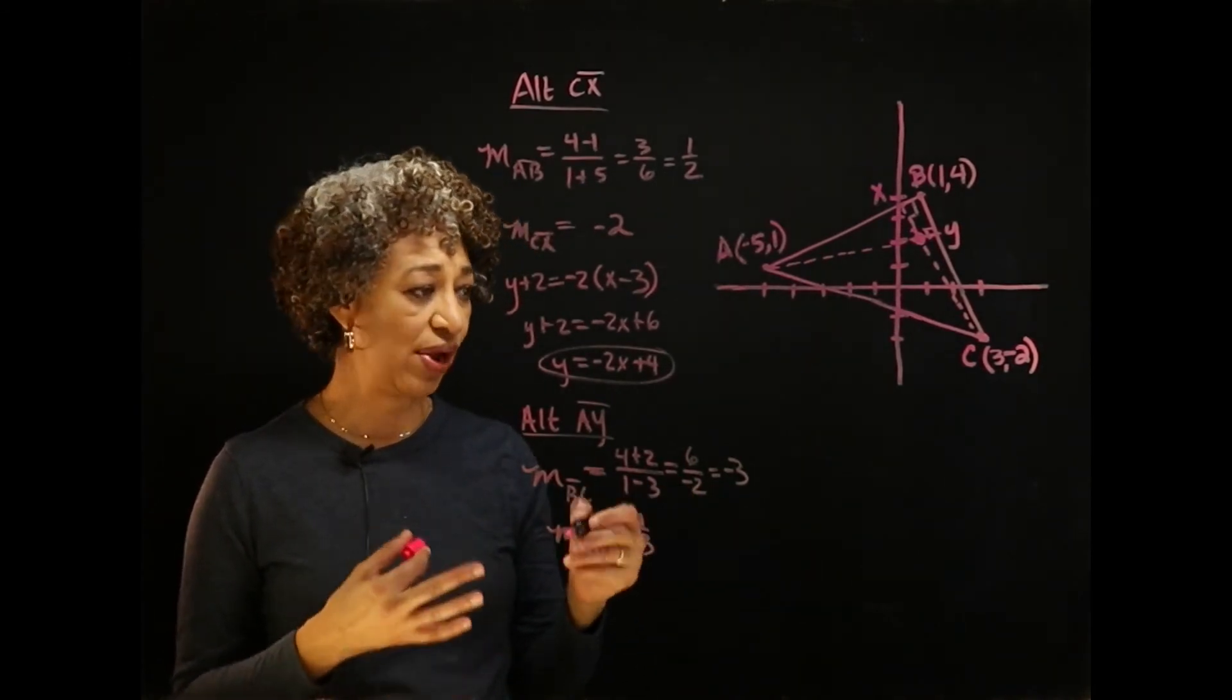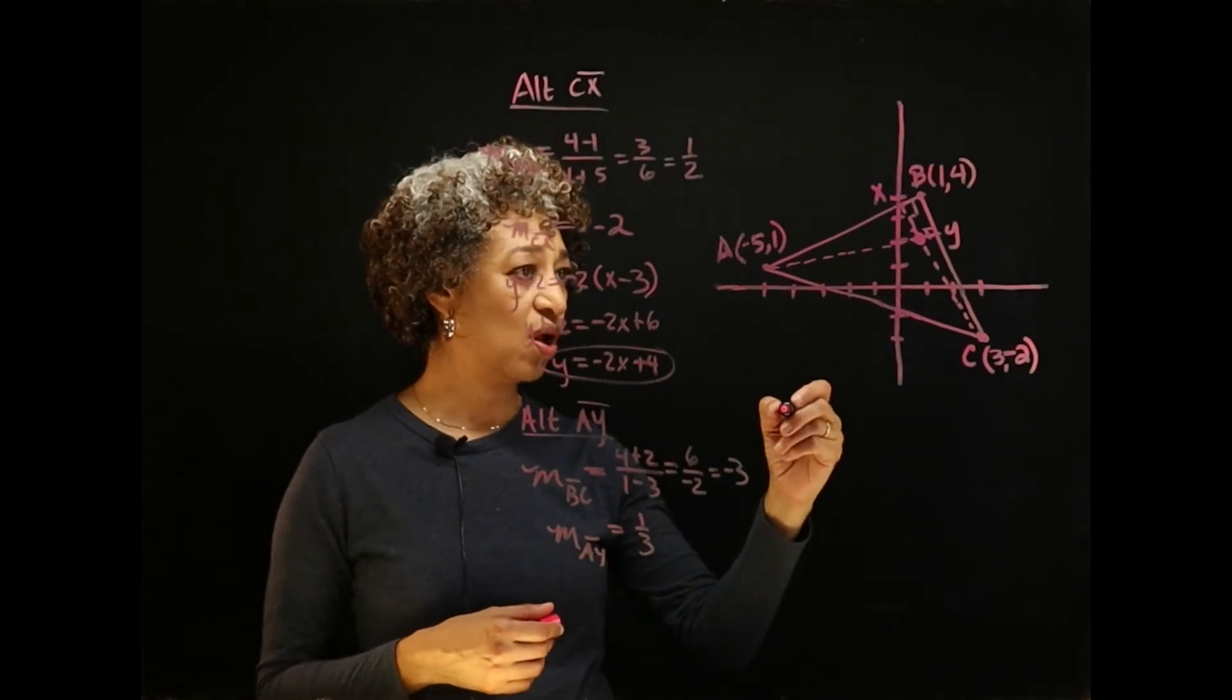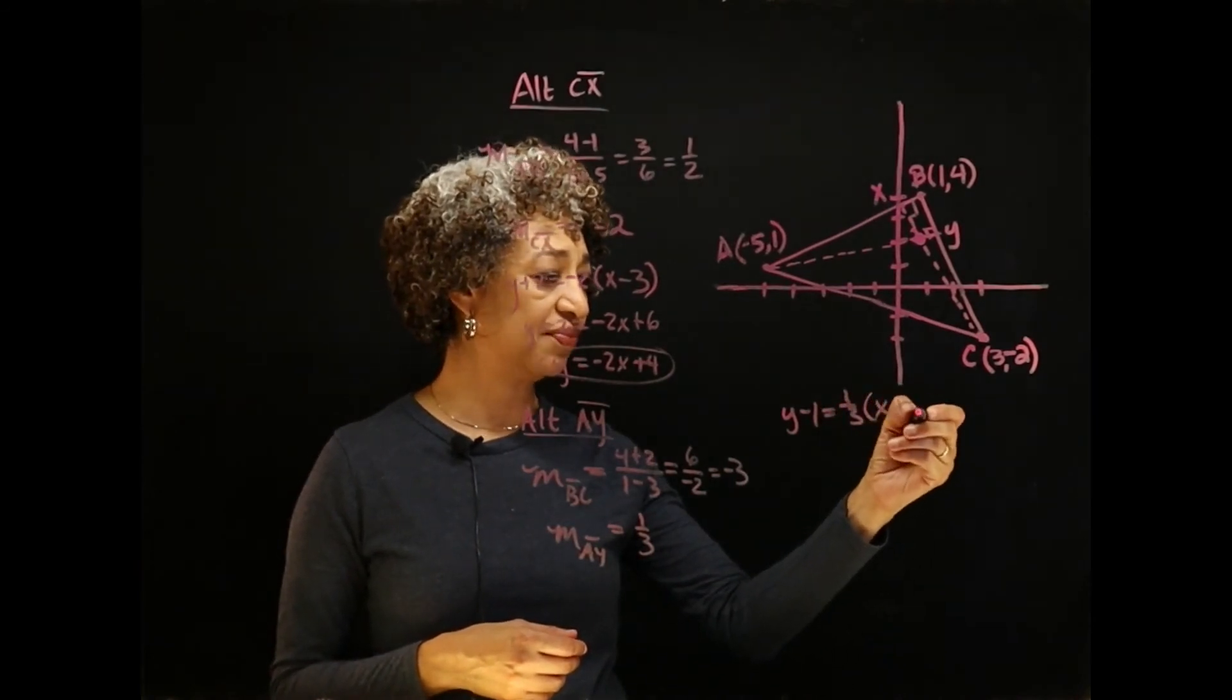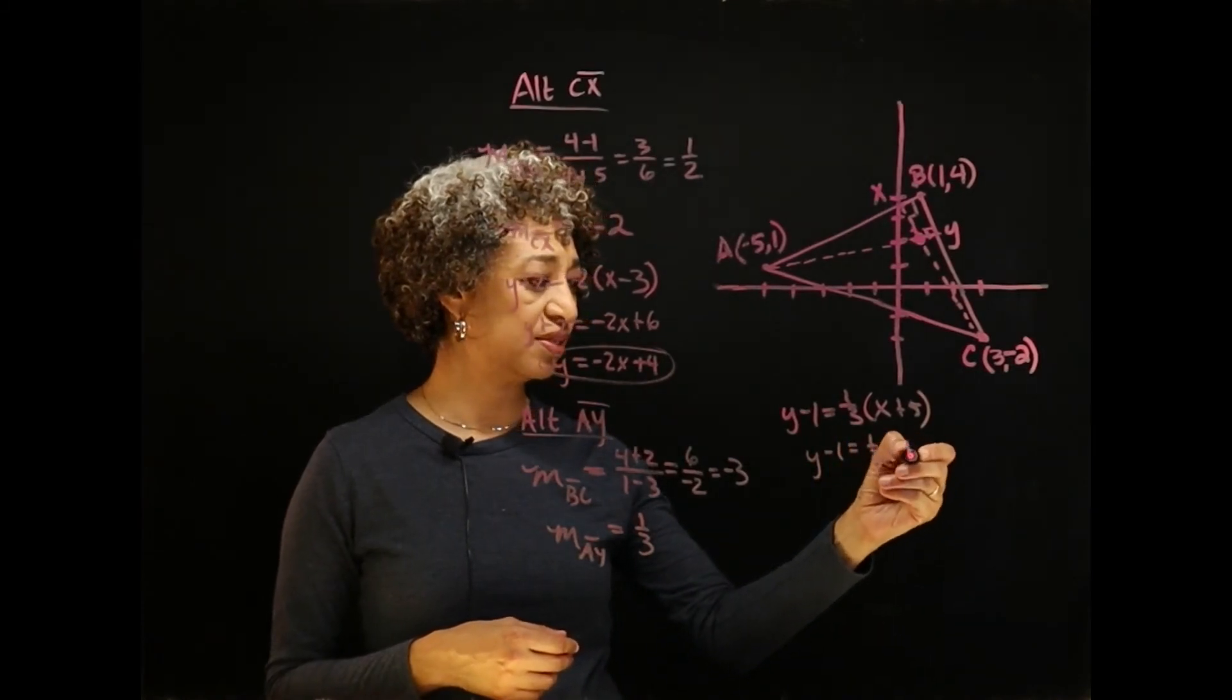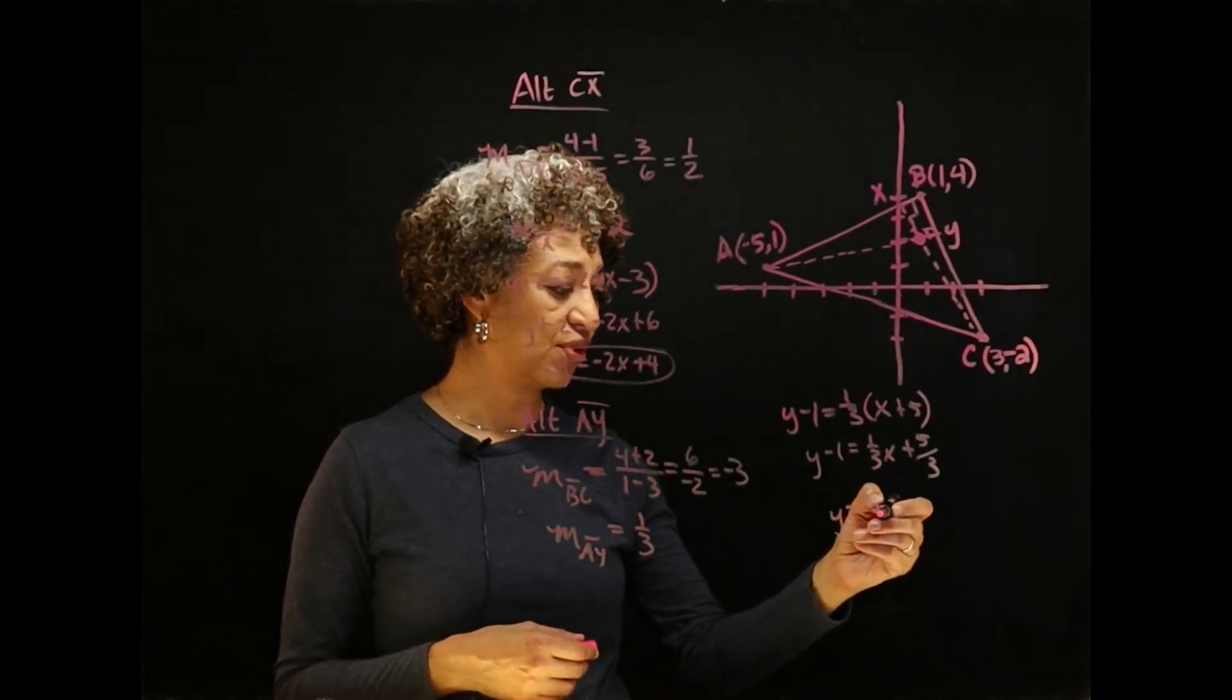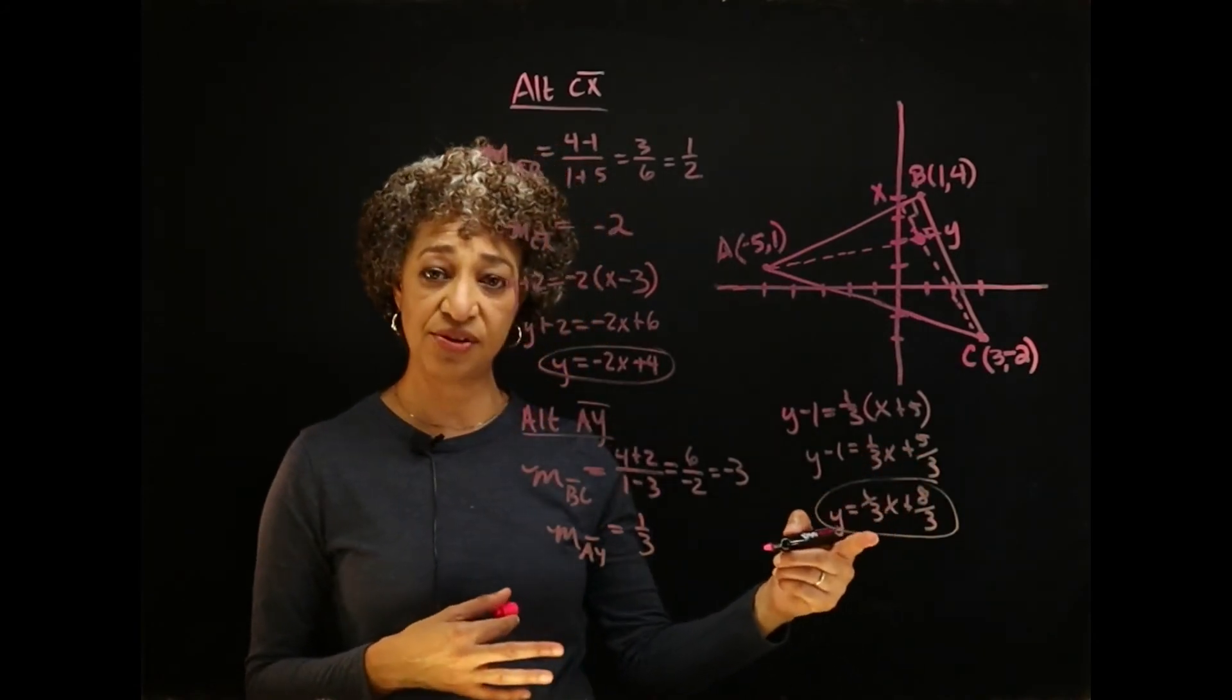Now I need to get the equation of AY. So I'm going to use point A and the slope of AY. So y minus 1 is equal to my slope, 1 third, times x minus a negative 5. Distributing, I have 1 third x plus 5 thirds. And then adding 1 to both sides, I have y is equal to 1 third x plus 8 thirds. And this is the equation of my other altitude.